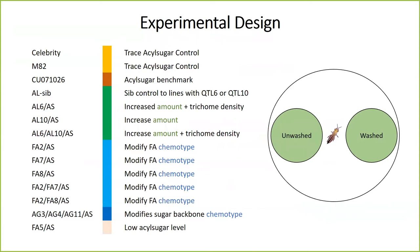In a separate dimension, looking at differences among genotypes: we have Celebrity and M82, which are commercial tomato controls that accumulate only trace acyl sugars. We have C071026, our acyl sugar benchmark breeding line, which accumulates about 15% of the level of acyl sugar of Solanum pennellii LA716. We also have lines with acyl sugar level QTL that modify the amount of acyl sugar, lines that modify the chemotype, and importantly, a fatty acid 5 line — a chemotype modulating QTL with a pleiotropic interaction that causes it to have a very low acyl sugar level, like Celebrity and M82, giving us a powerful and closely related control.